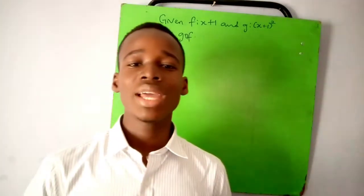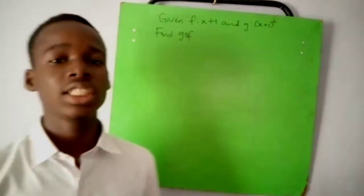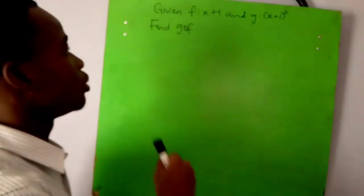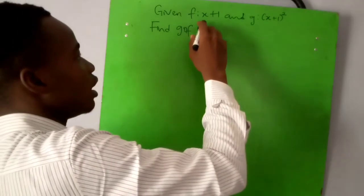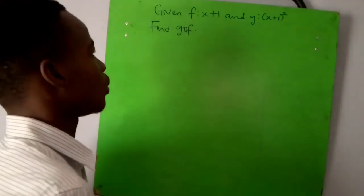Hello, welcome to Joe Academy where learning becomes much easier. Today I'll be showing you how to solve a problem on functions. We have: given f(x) = x+1 and g(x) = (x+1)^2, find g of f.